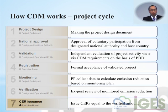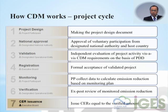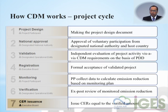In the CDM project cycle, the first step is for the project participant to create a Project Design Document. Second, the participant must get approval from the Designated National Authority. After national-level approval, they need to go through a validation process with the DOE, the Designated Operational Entity.